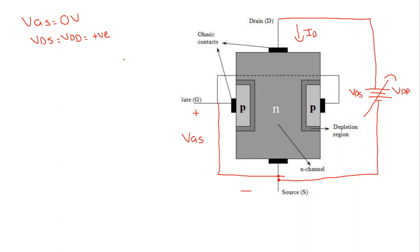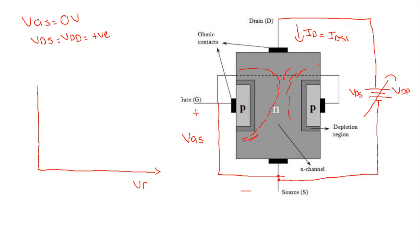Bismillahirrahmanirrahim, Assalamu Alaikum. Welcome to Technically Explained. In the last video we discussed the pinch-off voltage. We said that as we increase the voltage Vds, the current Id will also increase proportionally, and the width of the depletion regions is going to increase proportionally. When these two depletion regions appear to touch each other, we say that the pinch-off phenomenon has occurred. The voltage Vds at that point is called the pinch-off voltage. After the pinch-off voltage the current is maximum and the drain current becomes IDSS. Then we draw a graph between the drain current and Vds, with Vds on the x-axis and drain current Id on the y-axis.